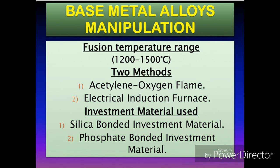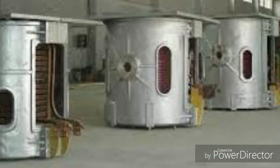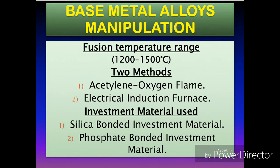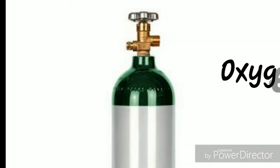The fusion temperatures of nickel-chromium and cobalt-chromium alloys vary with composition, but generally the range is 1200 to 1500 degrees centigrade. The two methods used for heating base metal casting alloys are: number one, acetylene-oxygen flame, and number two, electrical induction furnace. In the case of the acetylene-oxygen flame, the ratio of oxygen to acetylene must be carefully controlled, because excess oxygen causes oxidation of the alloy.